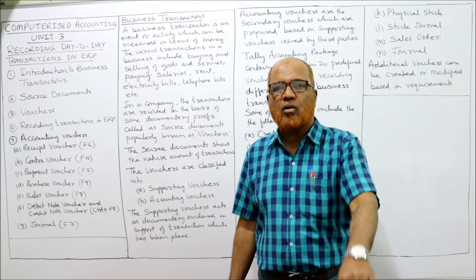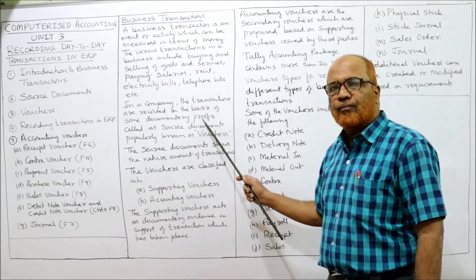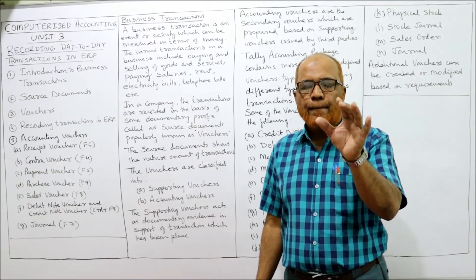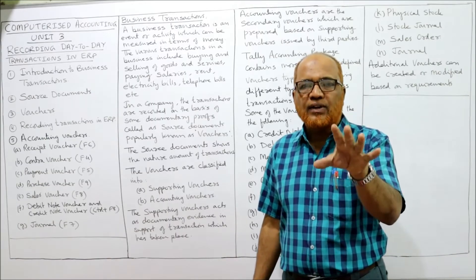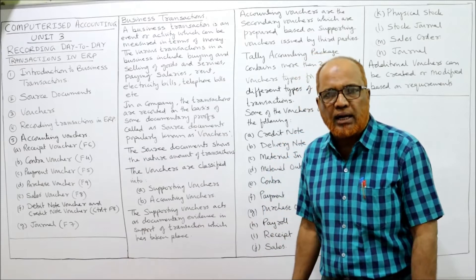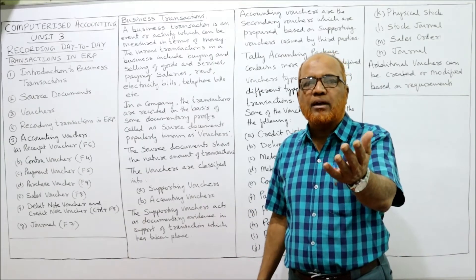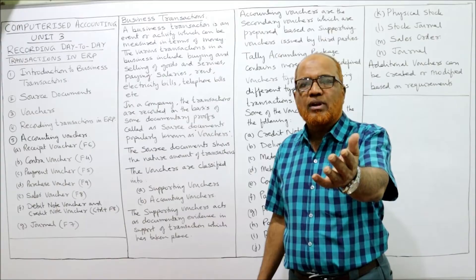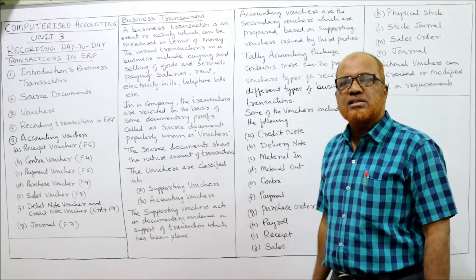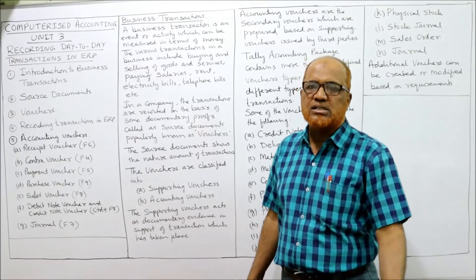That invoice bill or contract document is called documentary evidence. On the basis of this source document we record the transactions. In a company, transactions are recorded on the basis of documentary proof called the source document. The source document is the primary proof of the transactions; on the basis of the source document only, the transactions are recorded. Popularly, source documents are called vouchers. Vouchers are the source documents on the basis of which the transactions are recorded.